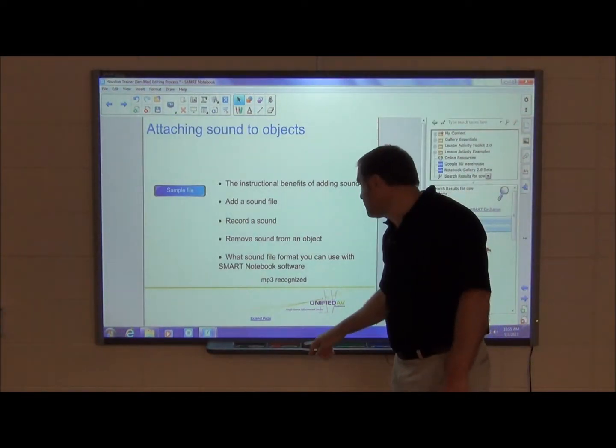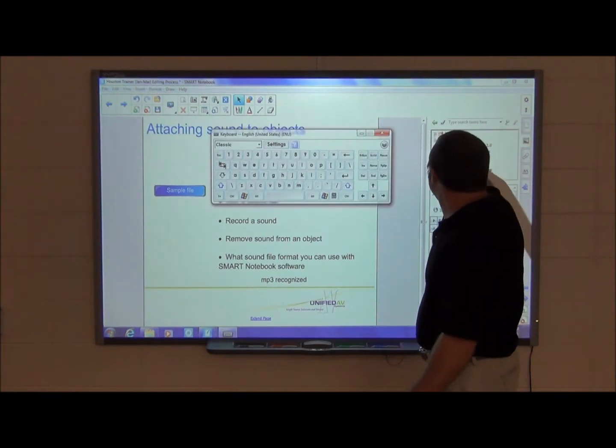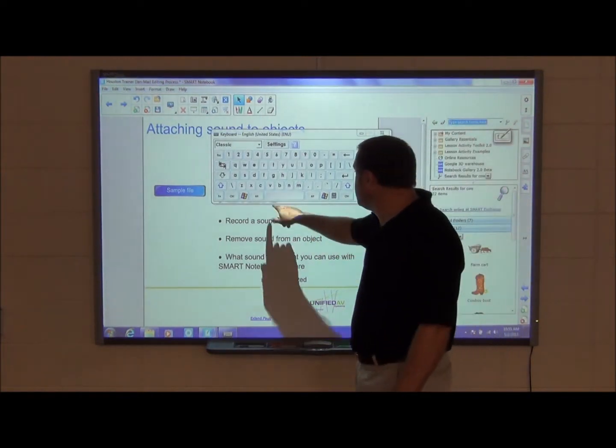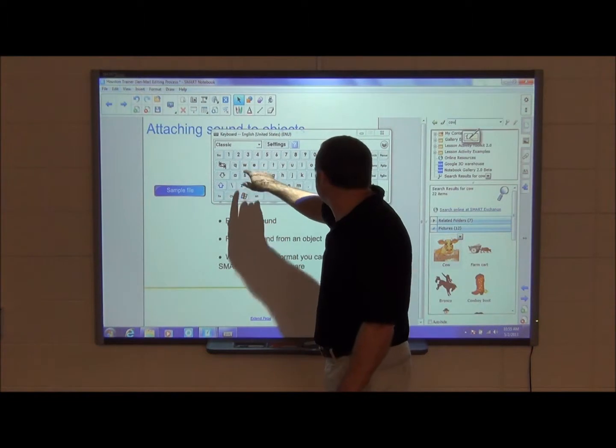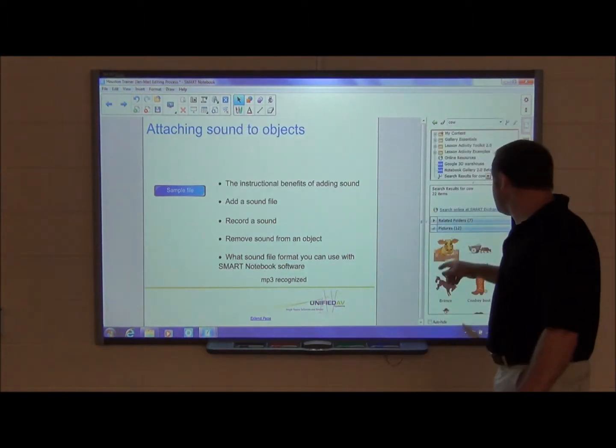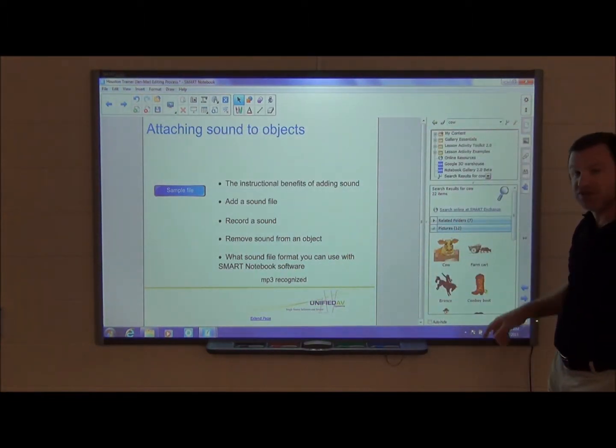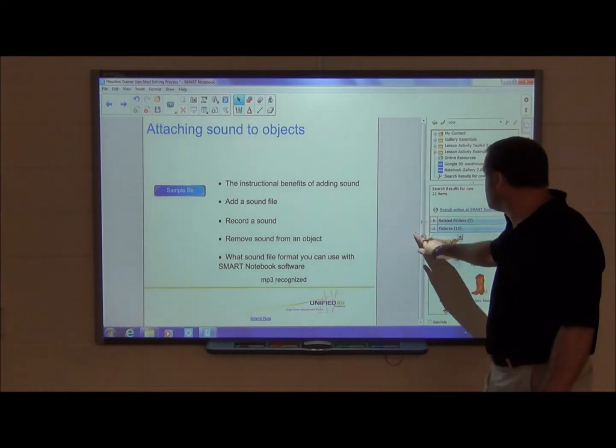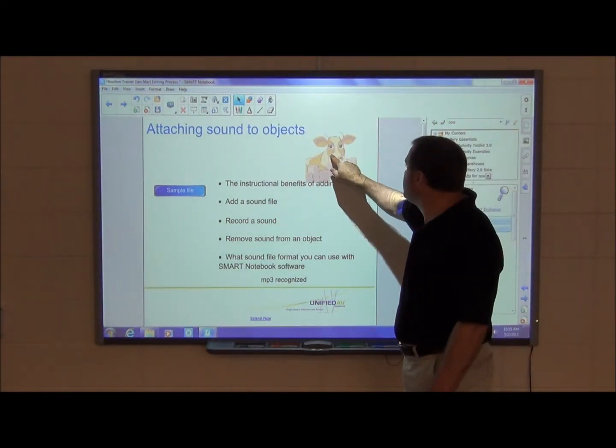So I'm going to bring up my on-screen keyboard, press in my search box here and I'm going to type in the word cow. I'm going to press enter and here's my pictures. I've got a few pictures of some cows here. I'm going to bring this one out to my file.